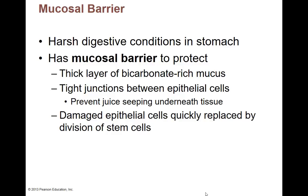The stomach is not a wonderful place to live — it's got harsh digestive conditions. So we have a mucosal barrier with lots of bicarbonate-rich ions that trap any extra acid so it doesn't penetrate and damage our epithelial cells. We also have tight junctions — the cells are stuck together as tight as possible — so that we don't have any gastric juices with low pH seeping underneath the tissues. If anything does get through and damages cells, our epithelial cells divide very quickly and replace themselves, usually within about three to six days.